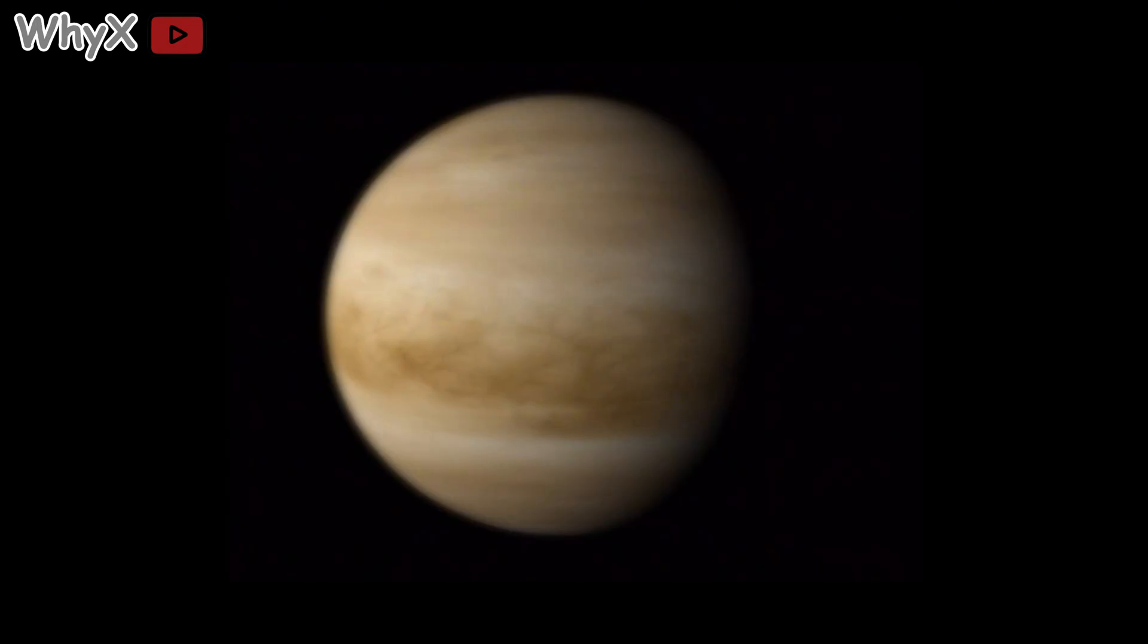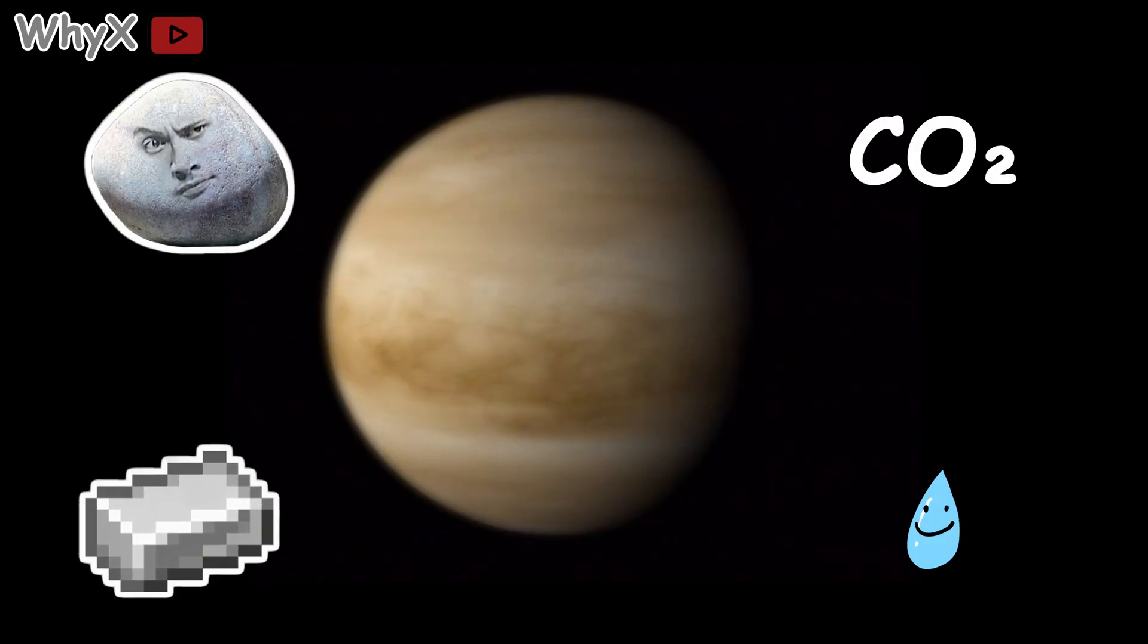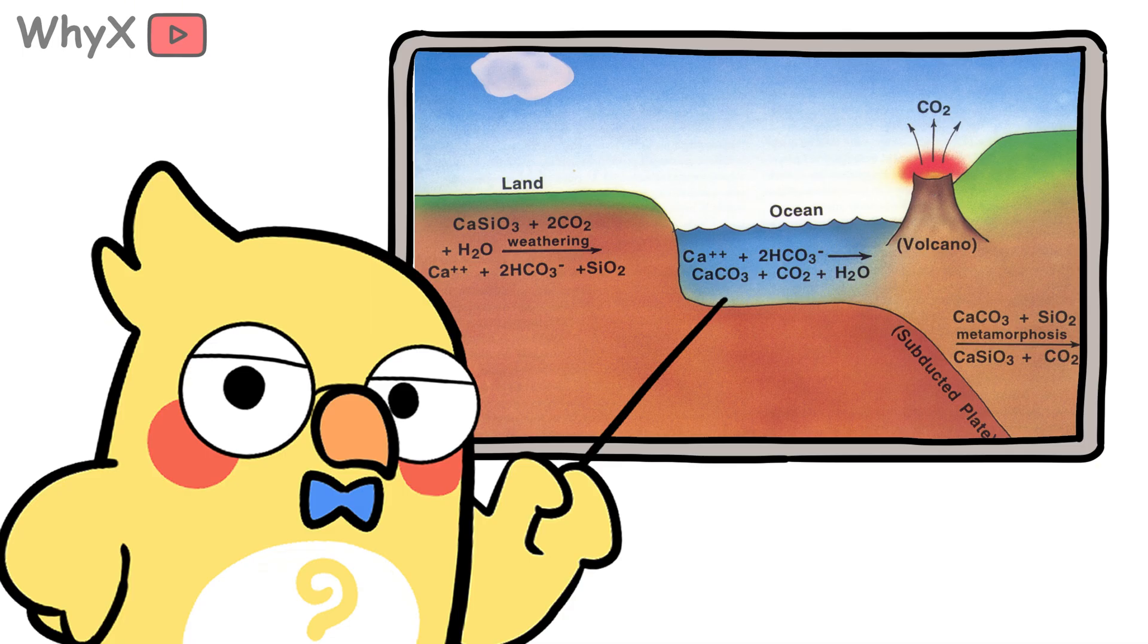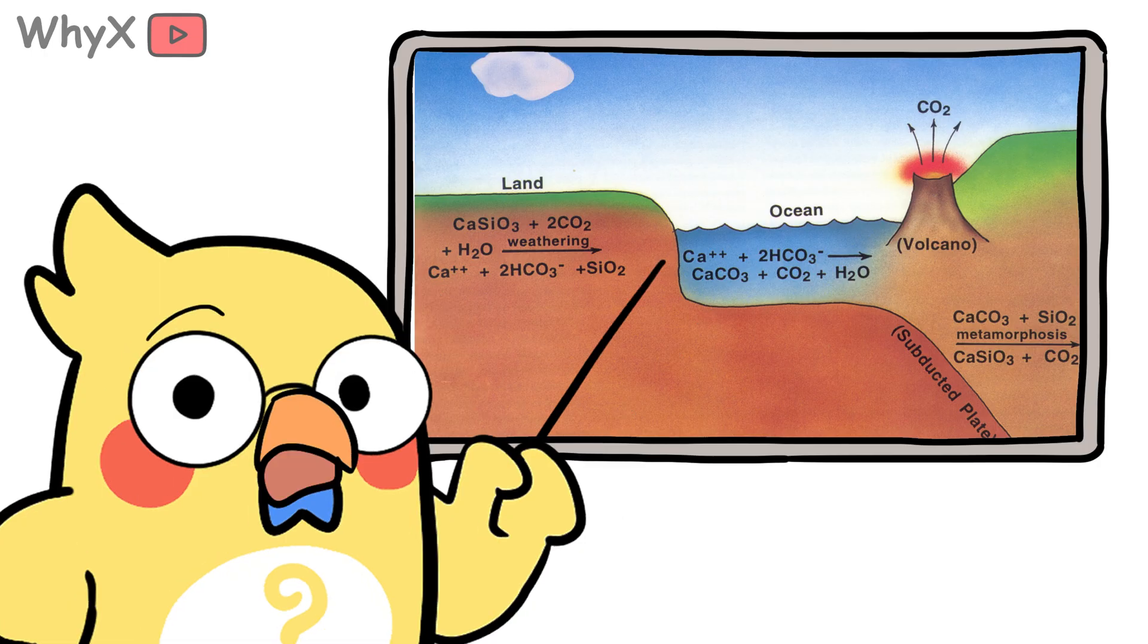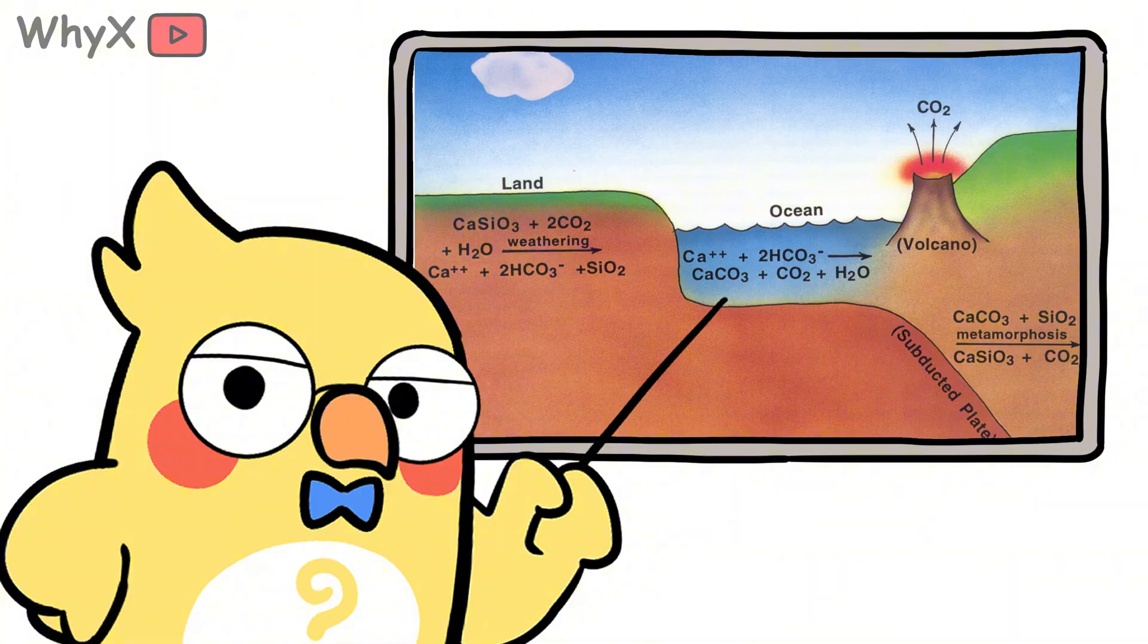The same basic ingredients—rock, iron, carbon dioxide, water—get arranged by different timing and feedbacks into two stories with opposite endings. On Earth, early oceans and a silicate weathering thermostat pull CO2 out of the sky and lock it in rock, while biology later turbocharges that process.